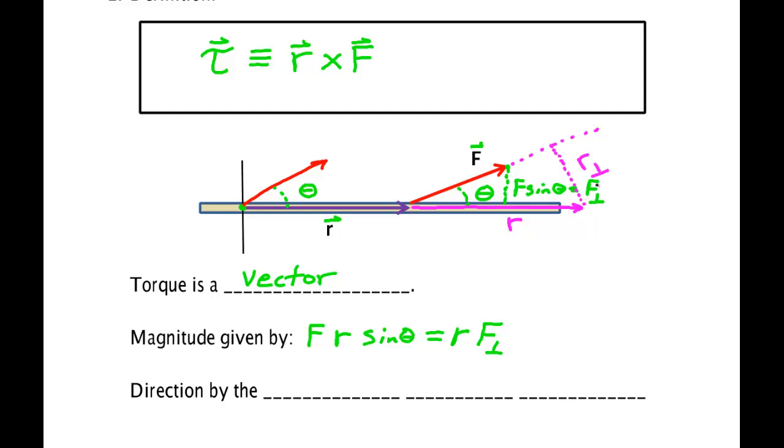This would be r being the hypotenuse, and this would be r sin theta, which is how much of r is perpendicular to F. So you could write it that way if you prefer.